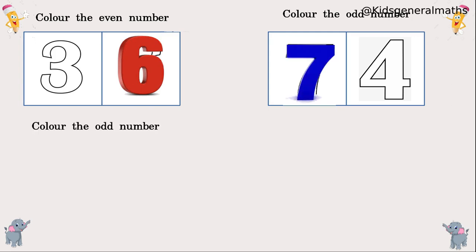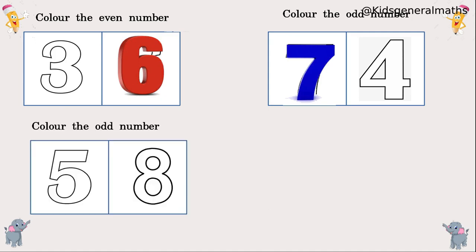Next we are going to colour the odd number. We know that odd numbers end with 1, 3, 5, 7, and 9. So which one is an odd number? 5 is an odd number, so we are going to colour the 5.